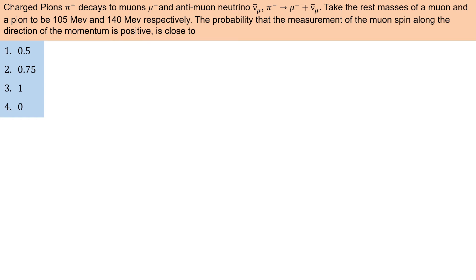Charged pion decays to muon and anti-muon neutrino. Take the rest masses of a muon and pion to be 105 MeV and 140 MeV respectively. The probability that the measurement of muon spin along the direction of the momentum is positive is close to?